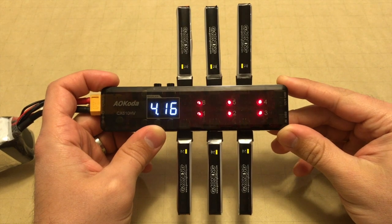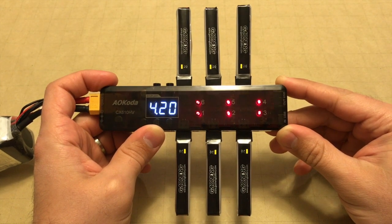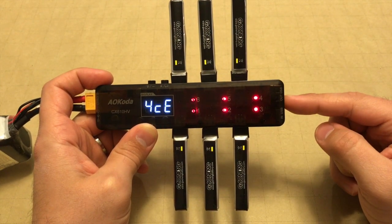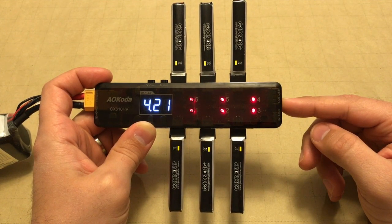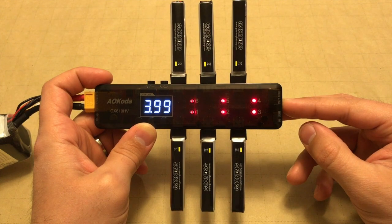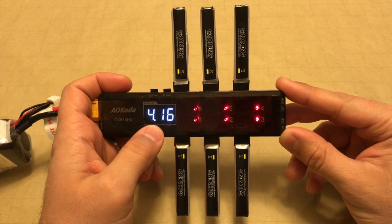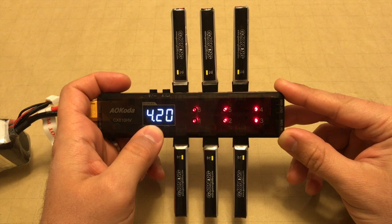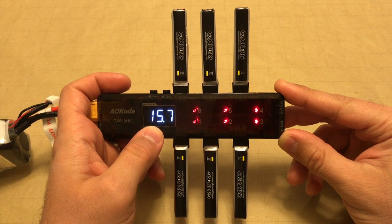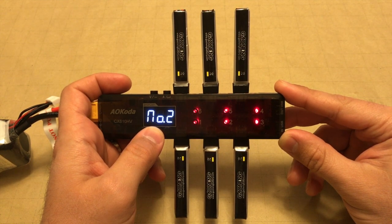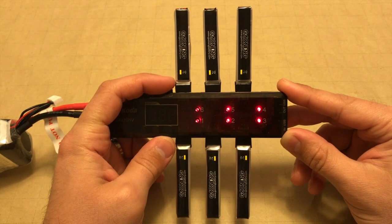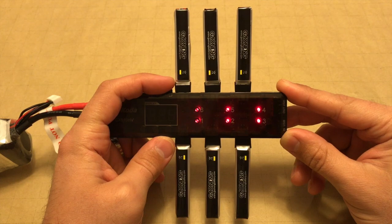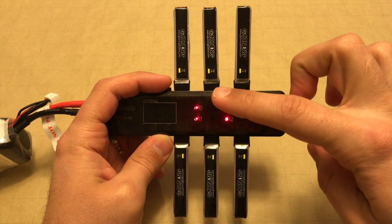All right, we have all six of our 1S batteries plugged in. And the red lights are indicating that each channel is charging. Those will slowly turn green one by one as they reach 4.35 volts. And right here, we can see on the display, it scrolls through and shows you what each channel is at right now. And as far as the current goes, we have this set to 0.3 amps.